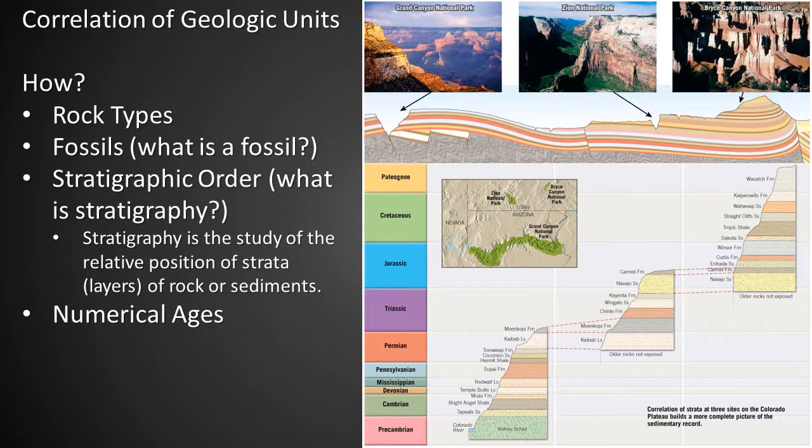The stratigraphic columns show how these sedimentary rocks share a similar stratigraphic history, which is the basis for correlating these geologic units from location to location. For example, at the Grand Canyon, the Moenkopi Formation (gray) is on top of the Kaibab Limestone (cream), as it also is at Zion. Similarly, the Carmel Formation (gray) is on top of the Navajo Sandstone (yellow) in both Zion and Bryce Canyon. The stratigraphic sequence of these units is an important aspect of stratigraphic correlation.